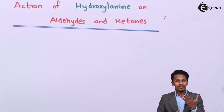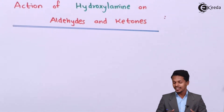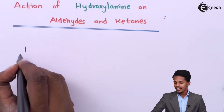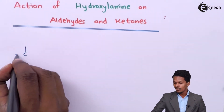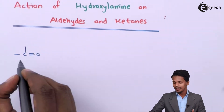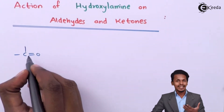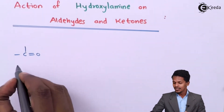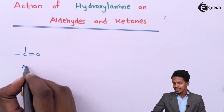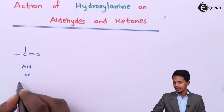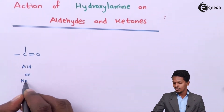Let me explain the general reaction. Suppose we consider an aldehyde or ketone — both have a common carbonyl group (C=O) attached to them. So this structure could represent either an aldehyde or a ketone.